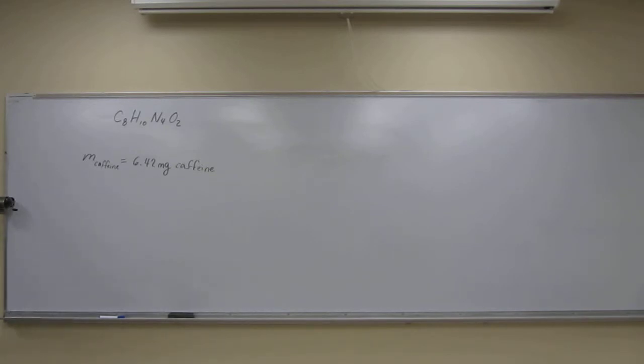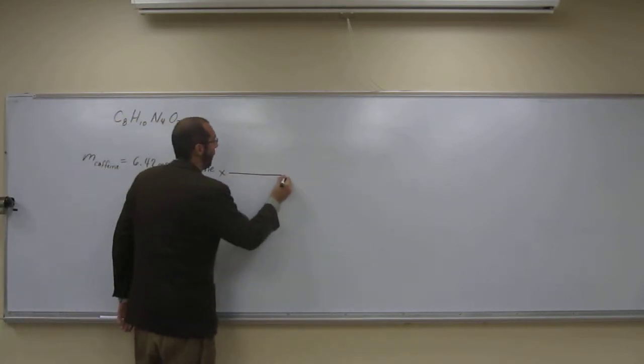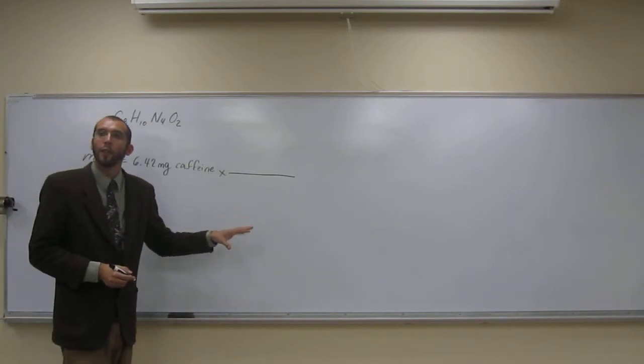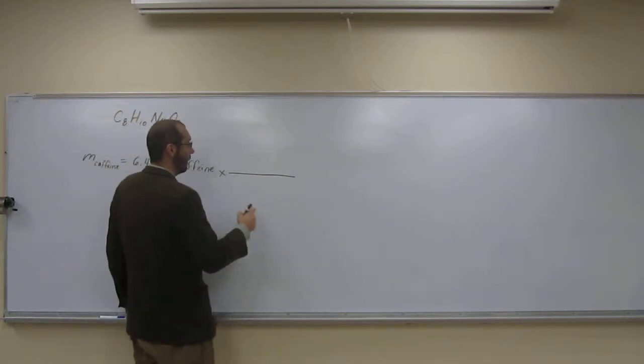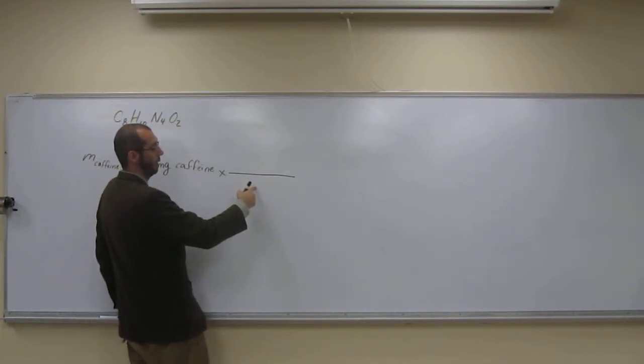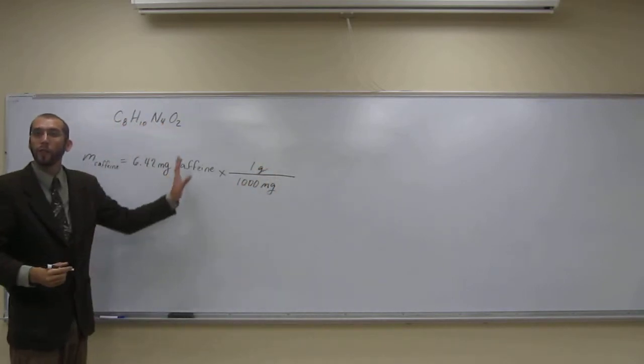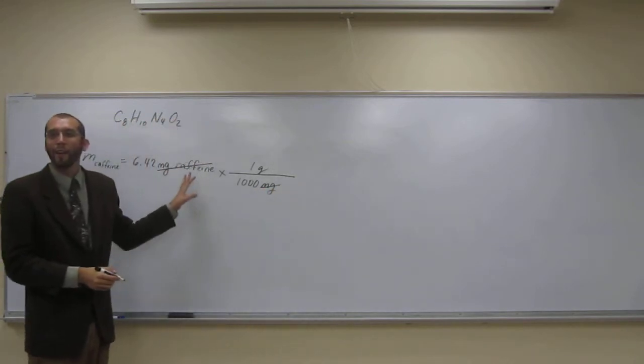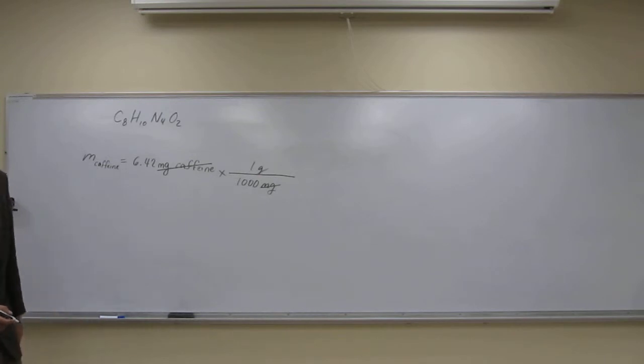Convert it to grams, yes, very good, to grams first. Why do I have to do that? Why can't I do the molar mass first? Because the molar mass is in grams per mole, right? So how many milligrams am I going to put down here? A thousand. So one gram, like that. Everybody okay with that one? I'm just going to leave that caffeine part out because it'll be too long.